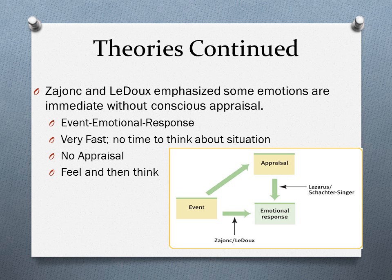There are two more extension theories to the Schachter-Singer theory. Zajonc and LeDoux emphasize that some emotions are immediate without conscious appraisal. Looking at the diagram: an event like a car accident takes place, the emotional response happens so quickly that you don't even think about the situation — no appraisal takes place — and then you think about it afterward. It's very fast; there's no room to think before reacting.